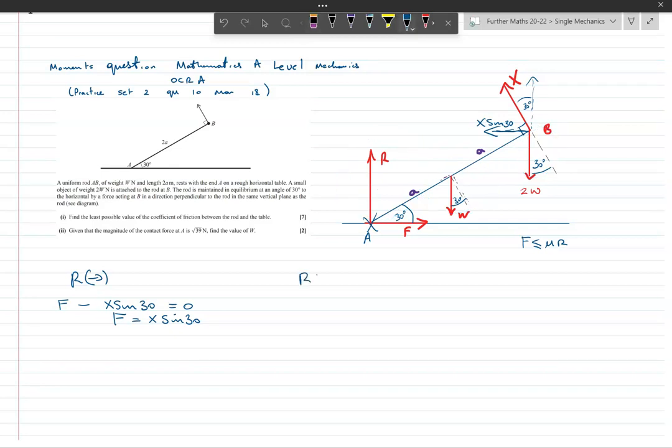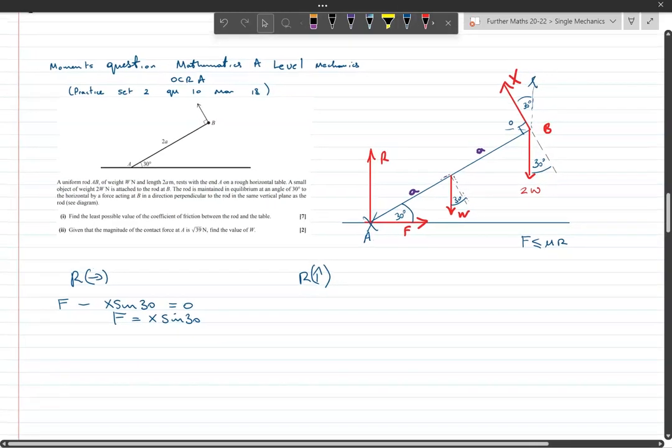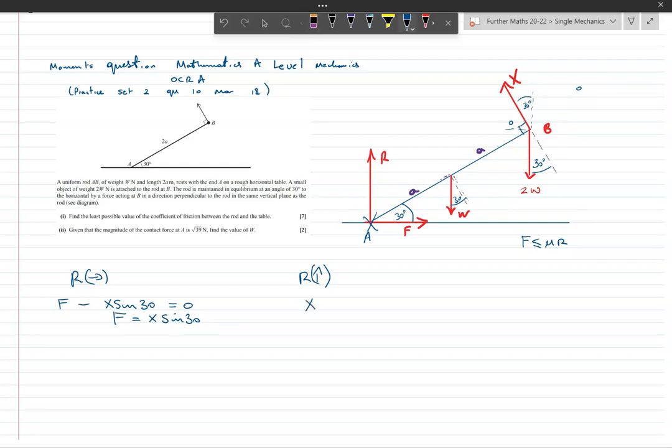Now let's resolve vertically. We now have the component that we're considering, which is this perpendicular component, which is X cos 30 up there, so that's going upwards. Then everything else is going either straight up or straight down. We've got X cos 30 plus R minus W minus 2W equals zero, or forces up equal forces down. We can combine the 2W and the 1W there pretty easily because they combine, adding one and two.